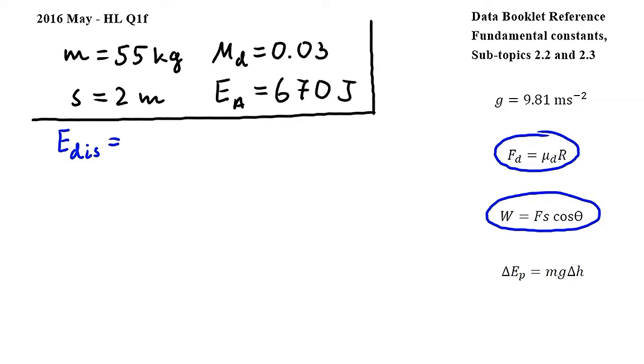The energy dissipated between A and B is equal to the work done by the dynamic friction force. So in the next step I will replace F in the second equation by μdR. Let's write this down. So we get μdR times s times cosine, and here I will substitute zero degrees for θ since the dynamic friction force and the distance traveled are in the same direction, which means that the angle between them is zero degrees.